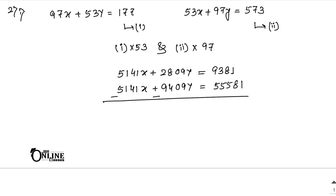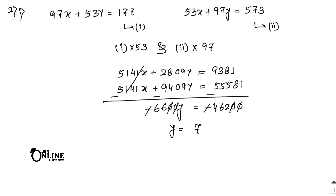Subtracting the equations cancels x, leaving minus 6600y equals minus 46200. Cancelling zeros and signs, y equals 462/66 equals 7. With y equals 7, substitute back into equation 1 or 2 to find x equals minus 2.